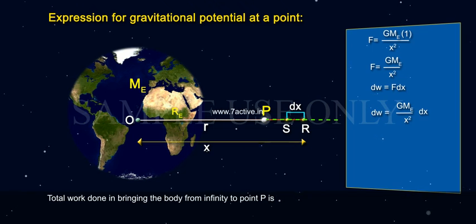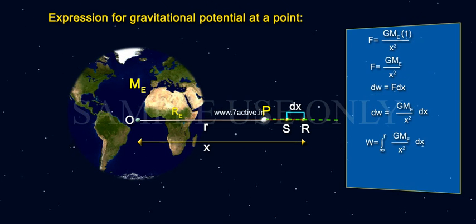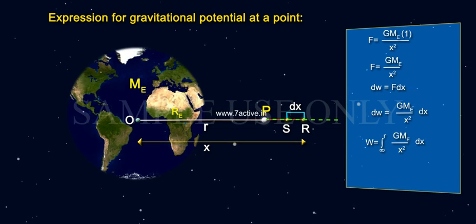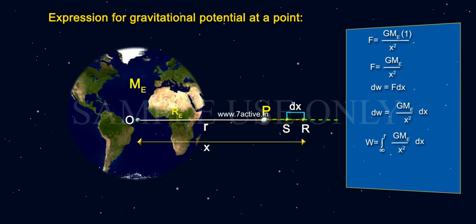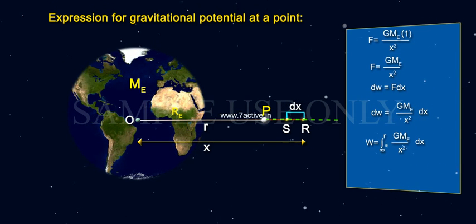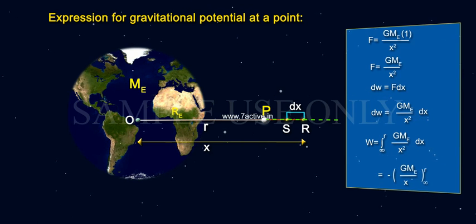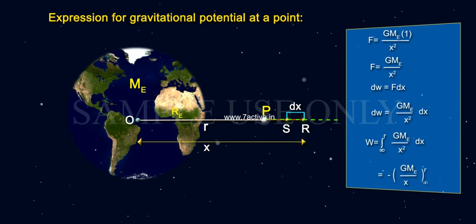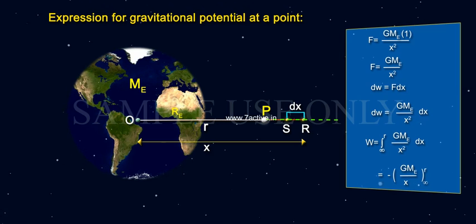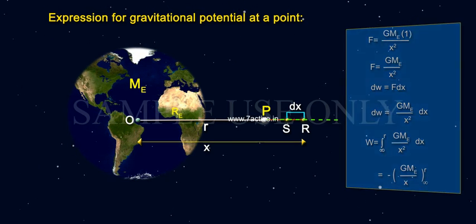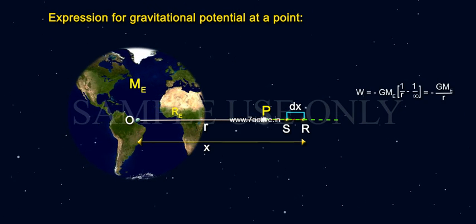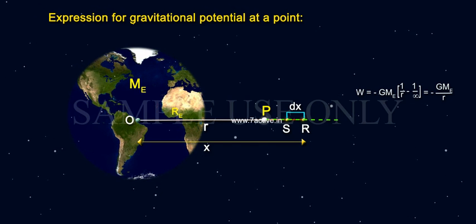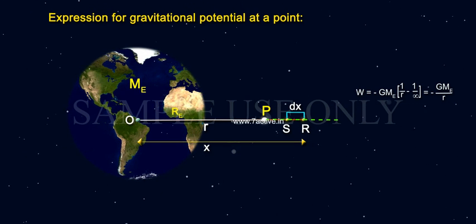Total work done in bringing the body from infinity to point P is W equals integration from infinity to R of GMₑ by x squared dx equals minus GMₑ by x from infinity to R. W equals minus GMₑ into (1 by R minus 1 by infinity) equals minus GMₑ by R.